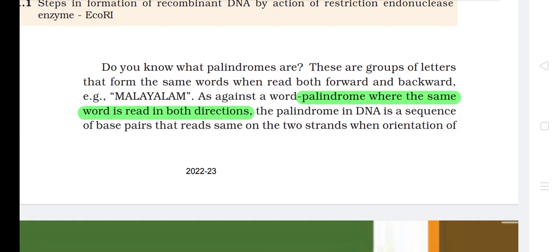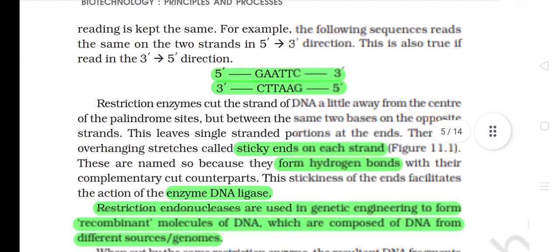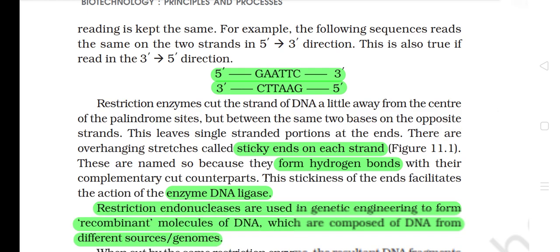Palindromes are groups of letters that form the same word when read both forward and backward — for example, 'Malayalam'. The palindrome in DNA is a sequence of base pairs that reads the same on the two strands when the orientation of reading is kept the same. For example, a sequence reads the same on the two strands in the 5' to 3' direction, and this is also true if read in the 3' to 5' direction. Restriction enzymes cut the strand of DNA a little away from the center of the palindrome sites but between the same two bases on the opposite strands.